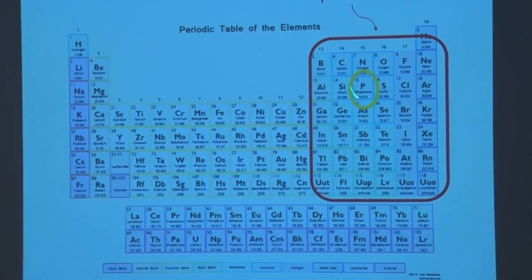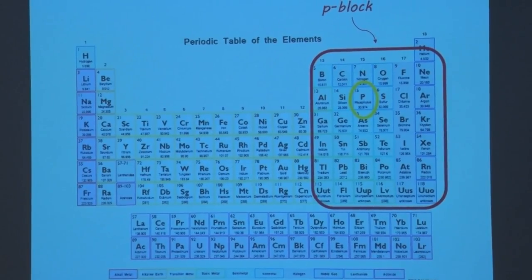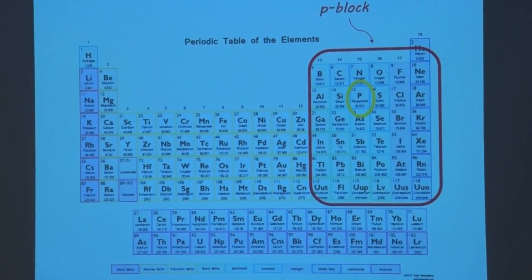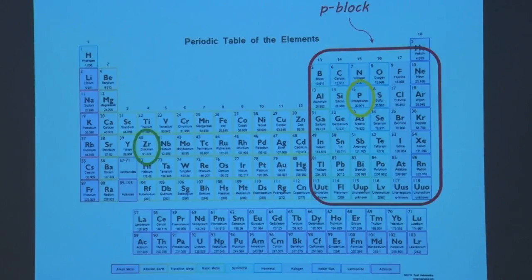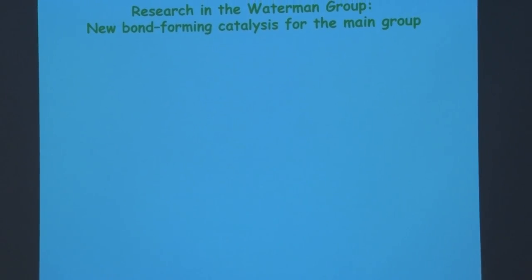A lot of the chemistry today is going to be about phosphorus. When I talk about catalysts, I'm thinking about using transition metals — the star of the show on the catalyst side is zirconium, although there'll be some other players too. So we're trying to find catalysts and do main group chemistry.